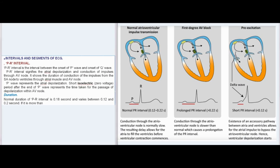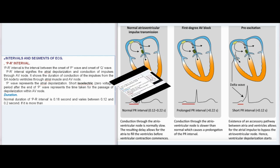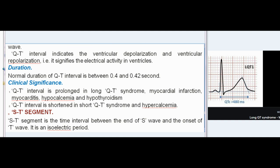Intervals and Segments of ECG. PR-interval: PR-interval is the interval between the onset of P-wave and onset of Q-wave. It signifies atrial depolarization and conduction of impulses through the AV node, showing the duration of conduction from the SA node to ventricles through atrial muscle and AV node. A short isoelectric (zero voltage) period after the end of P-wave represents the time taken for depolarization within the AV node. Normal duration of PR-interval is 0.18 second, varying between 0.12 and 0.2 second. If it is more than 0.2 second, it signifies delay in conduction from SA node to ventricles — usually occurring in the AV node, called AV-nodal delay.